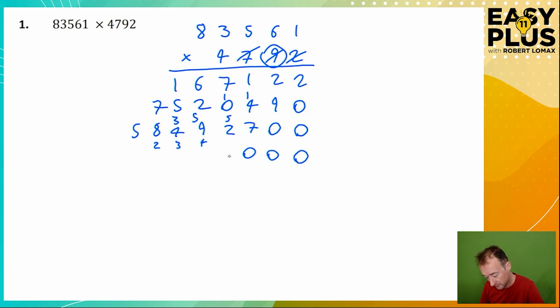4 times 1 is 4. 4 times 6 is 24, we carry the 2 of course. 4 times 5 is 20, the carried 2 makes it 22, again we carry the 2.